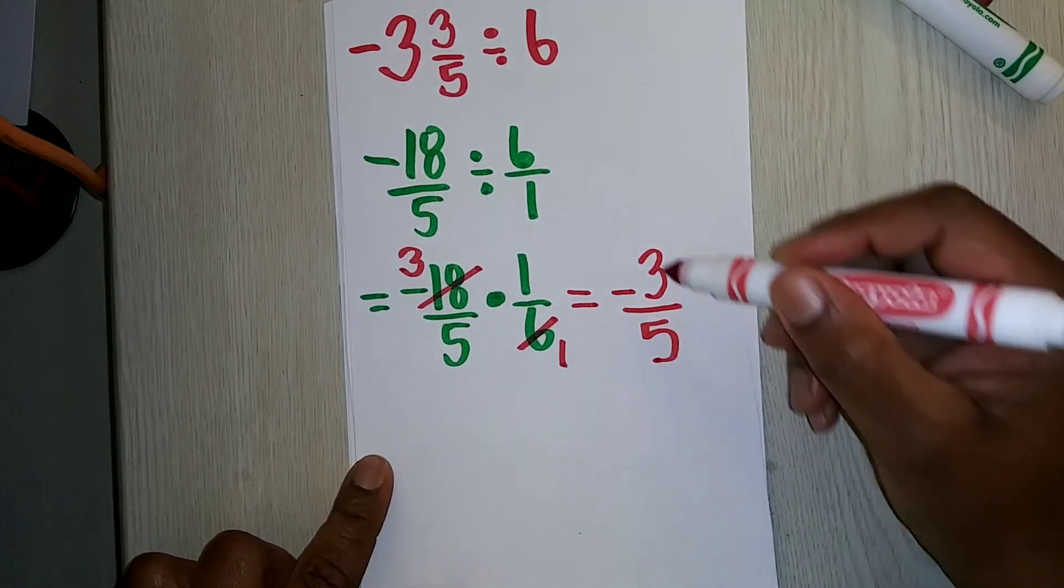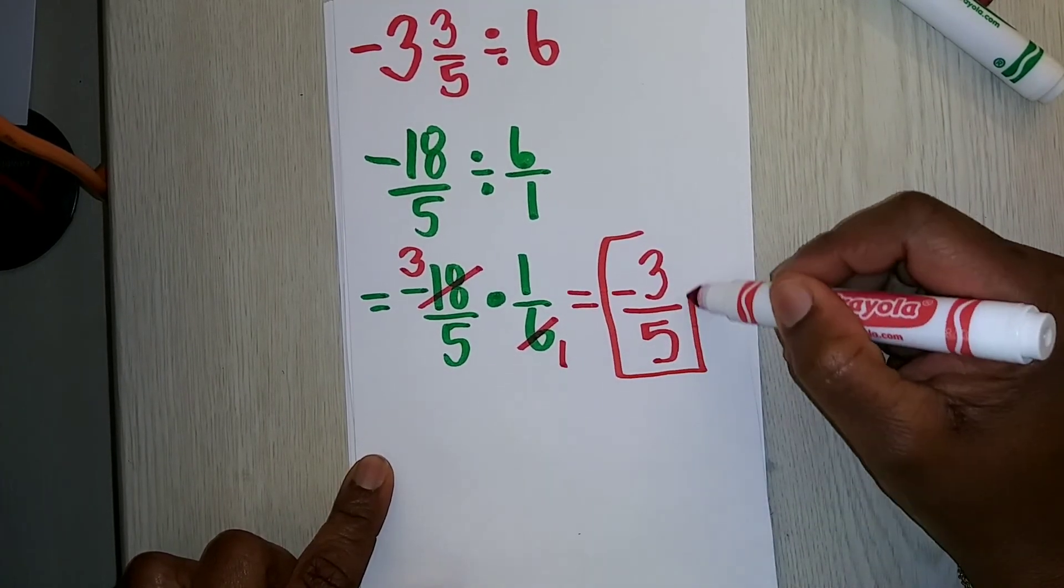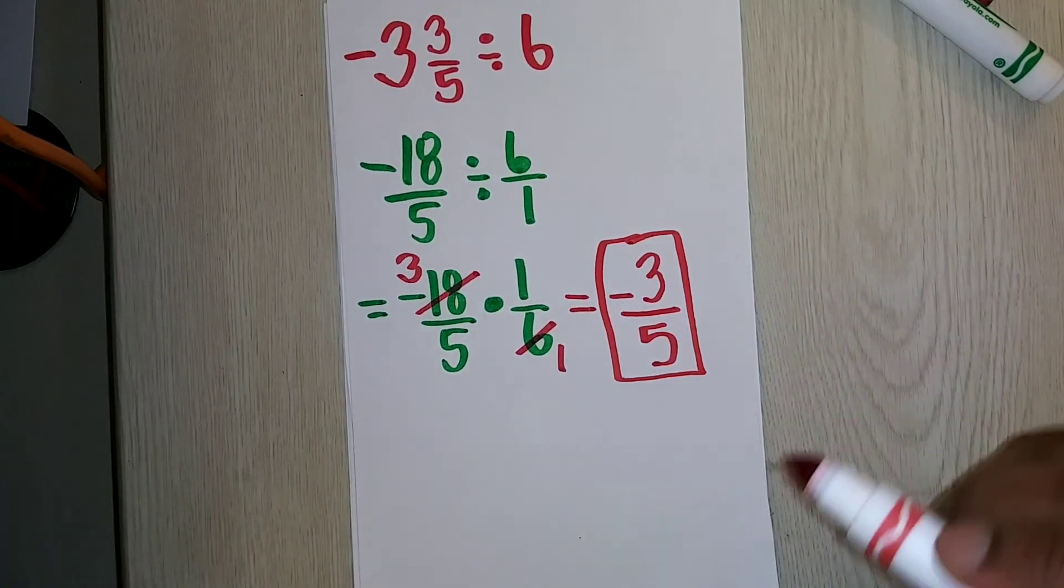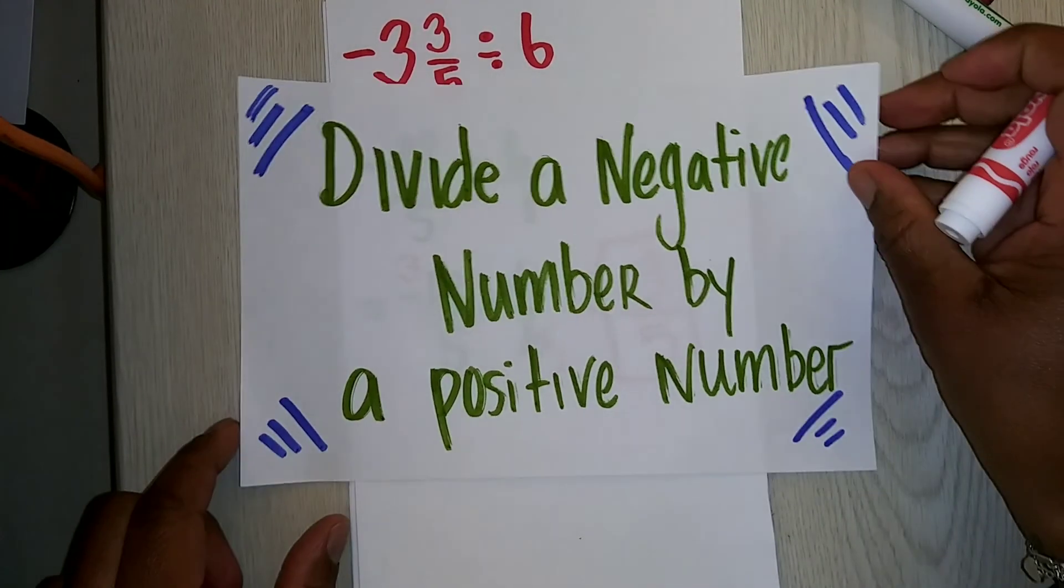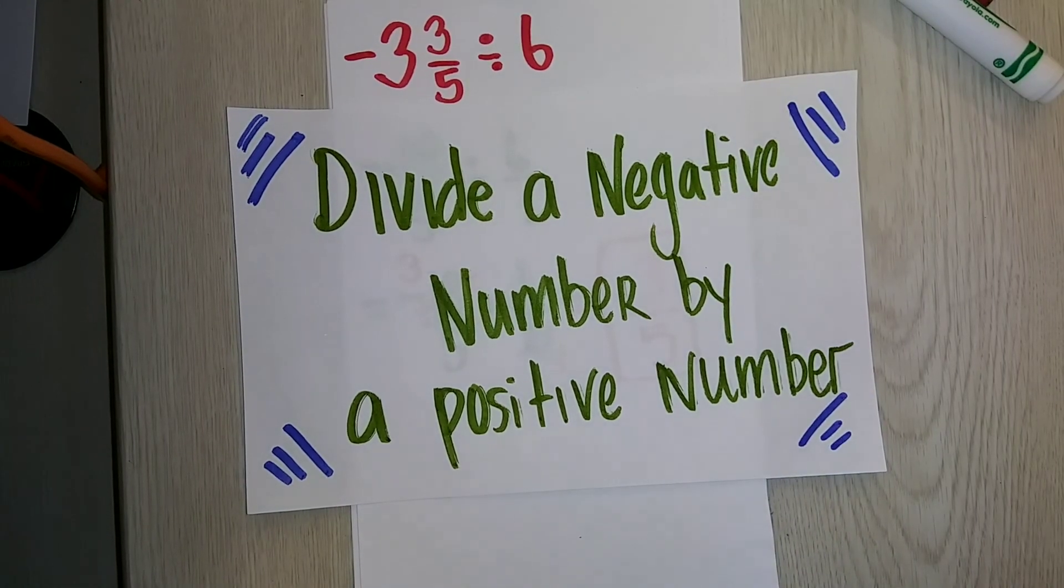And so in this case, the final answer will be negative 3 fifths. In this video, we divided a negative number by a positive number.